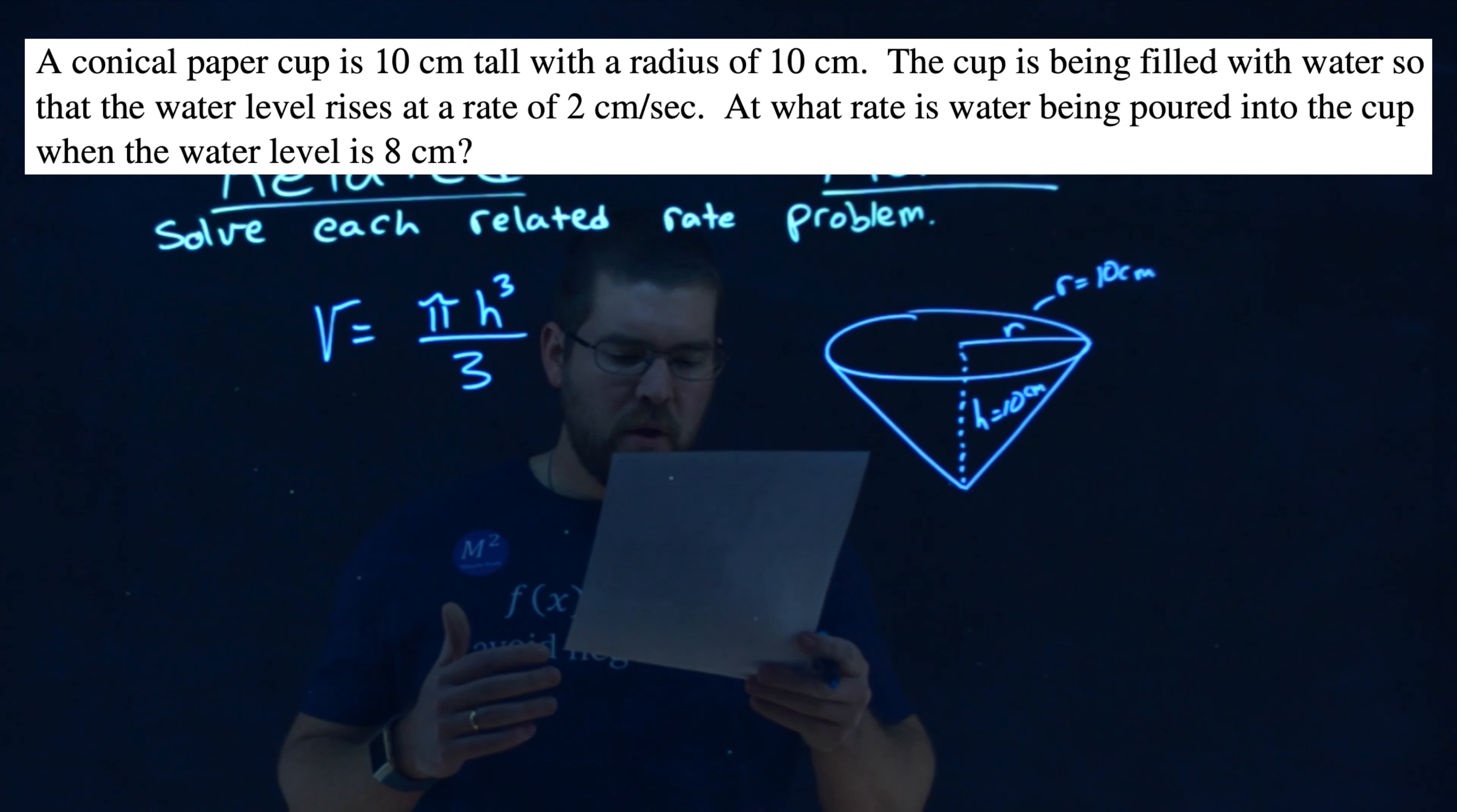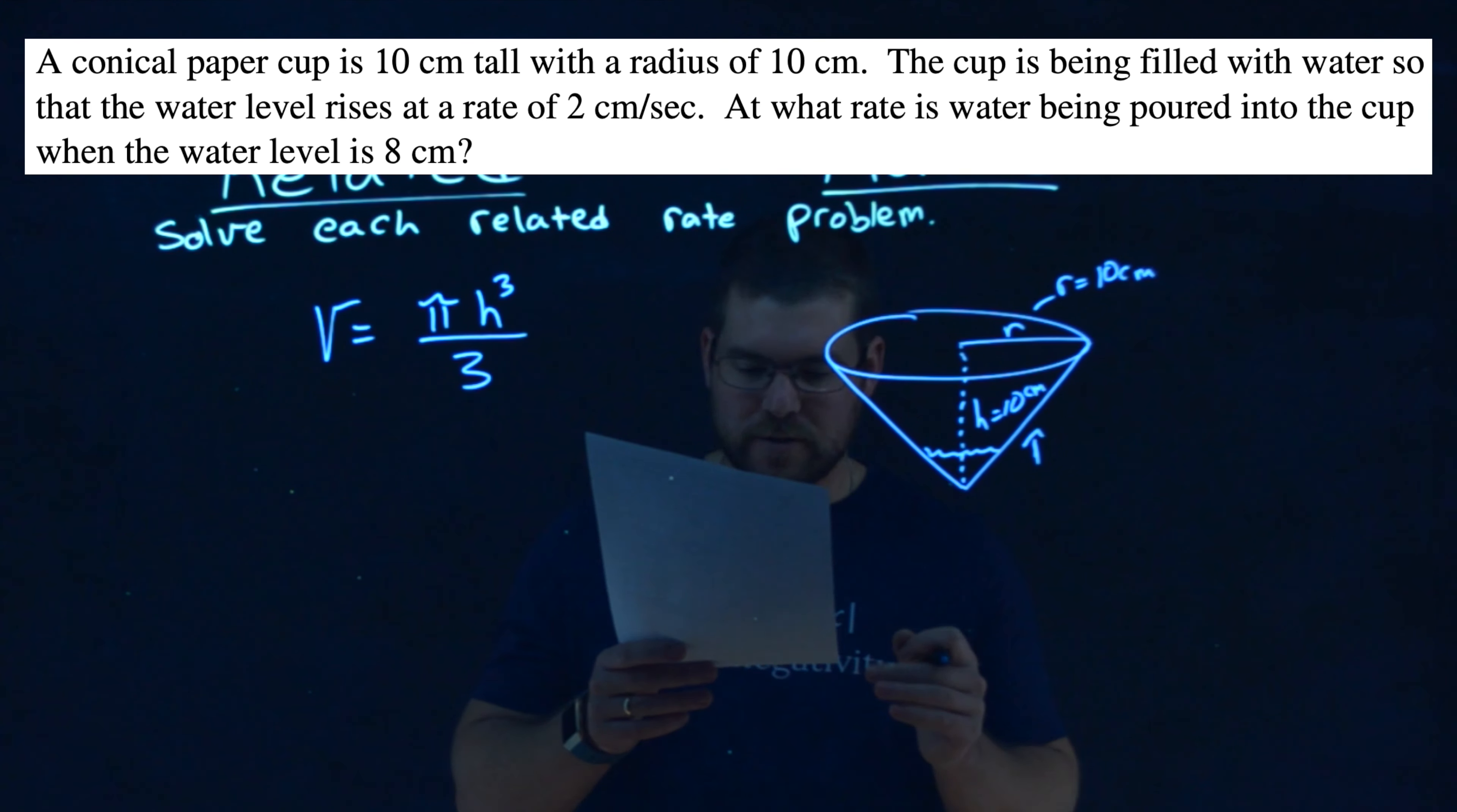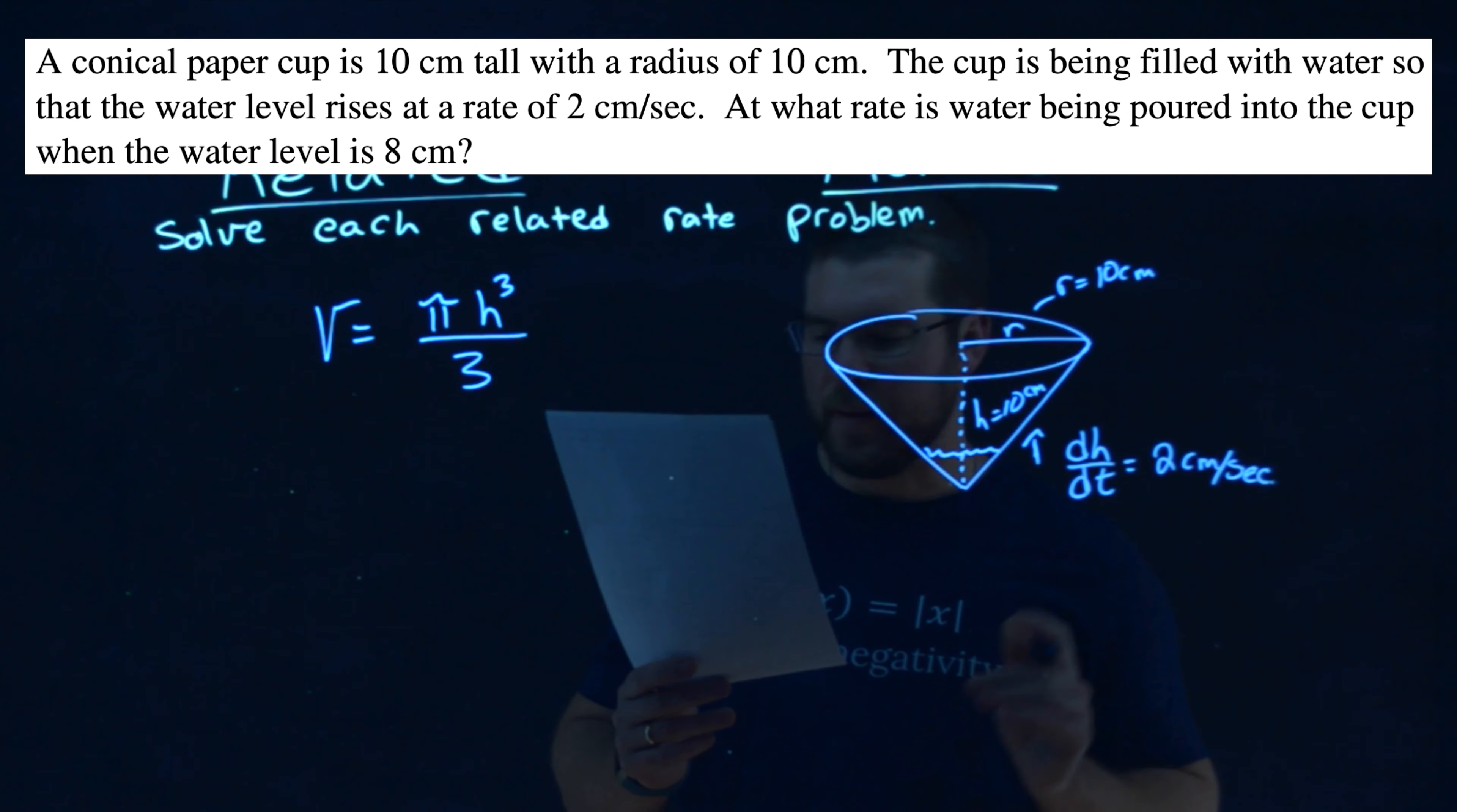Now, we are given a rate that the water level, so the water in here, that water level is rising up at a rate of 2 centimeters per second. So the height of where the water is is rising at a rate of 2 centimeters per second. And that we will call a rate, so dh dt, the height with respect to time, is 2 centimeters per second.